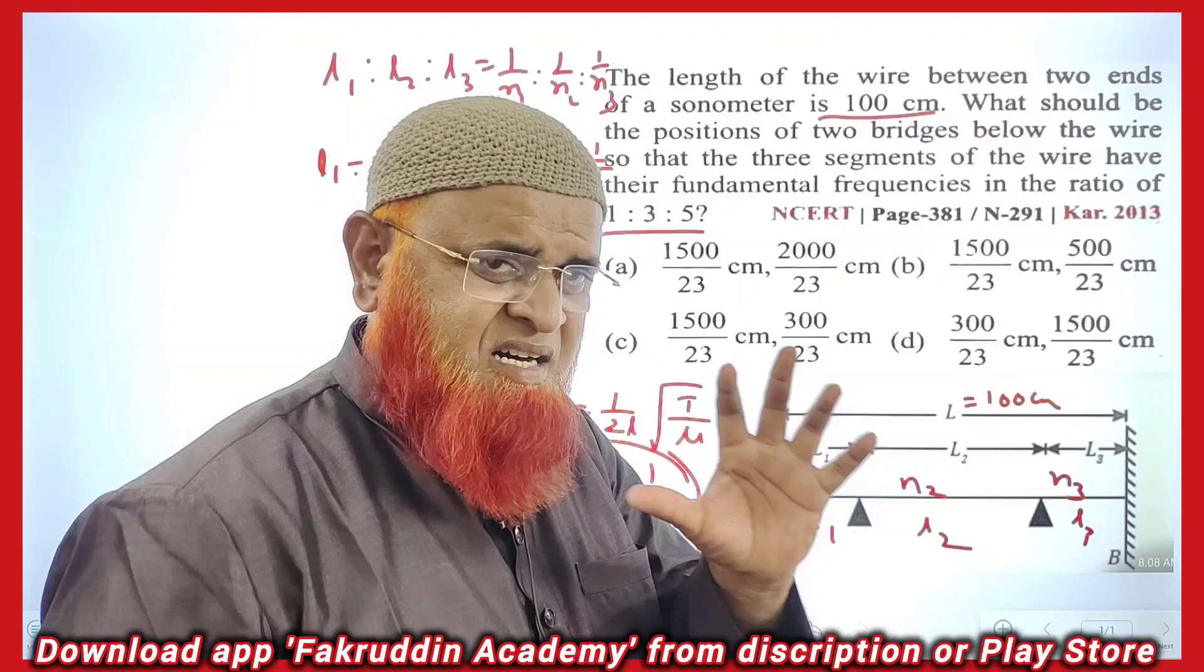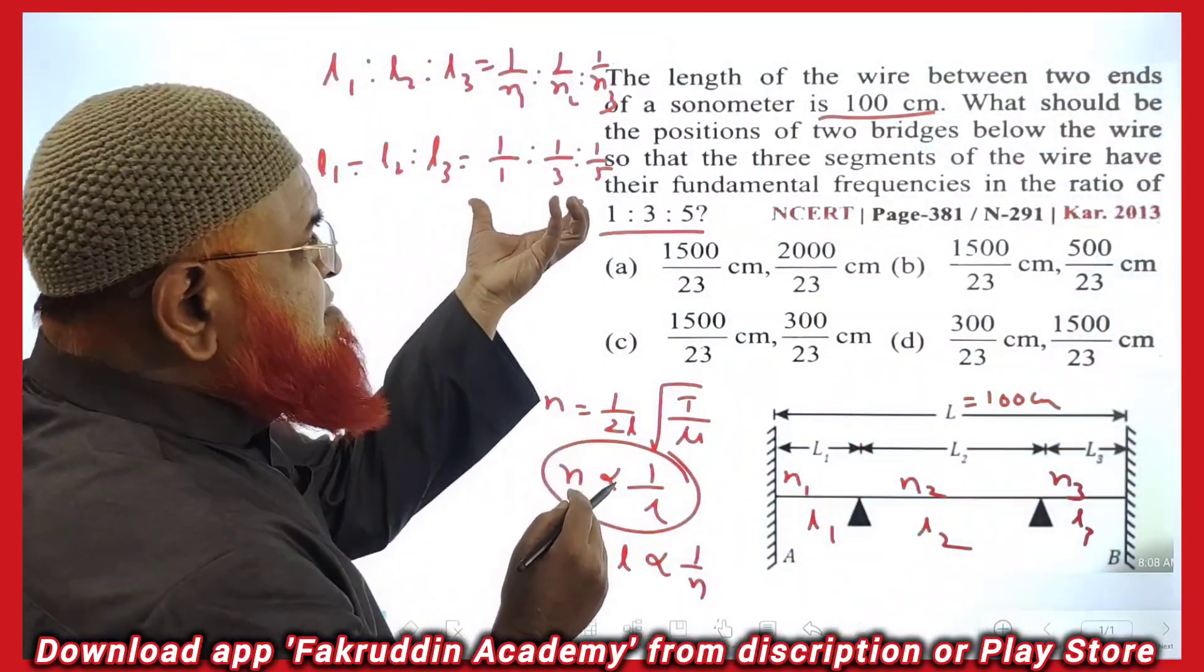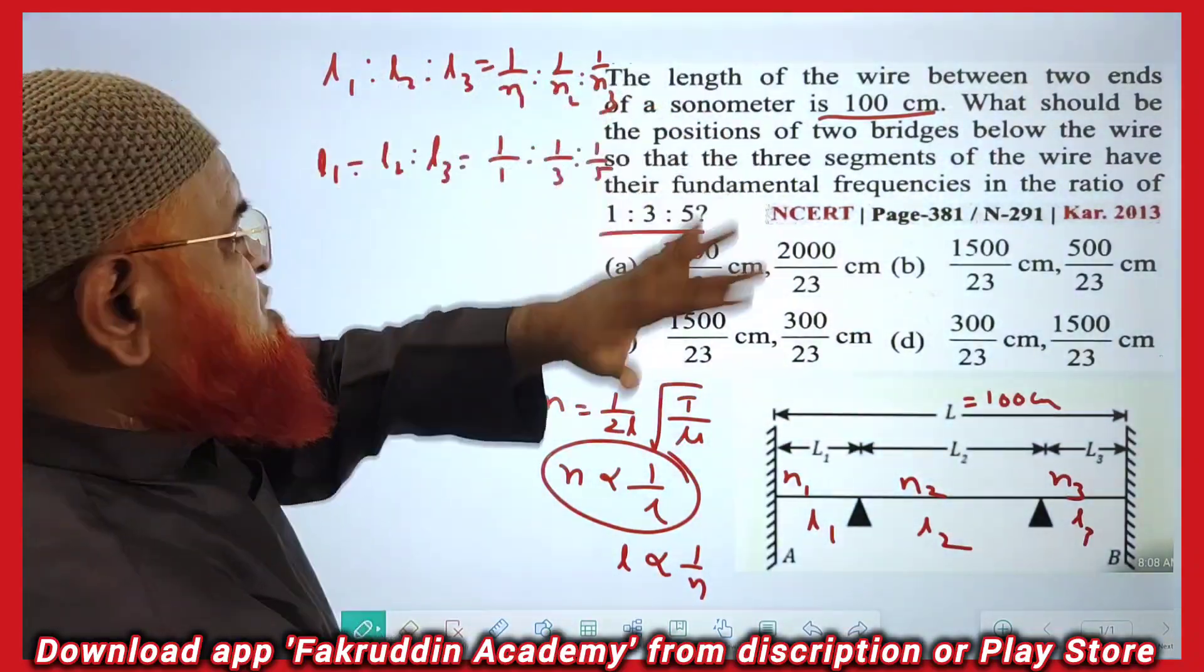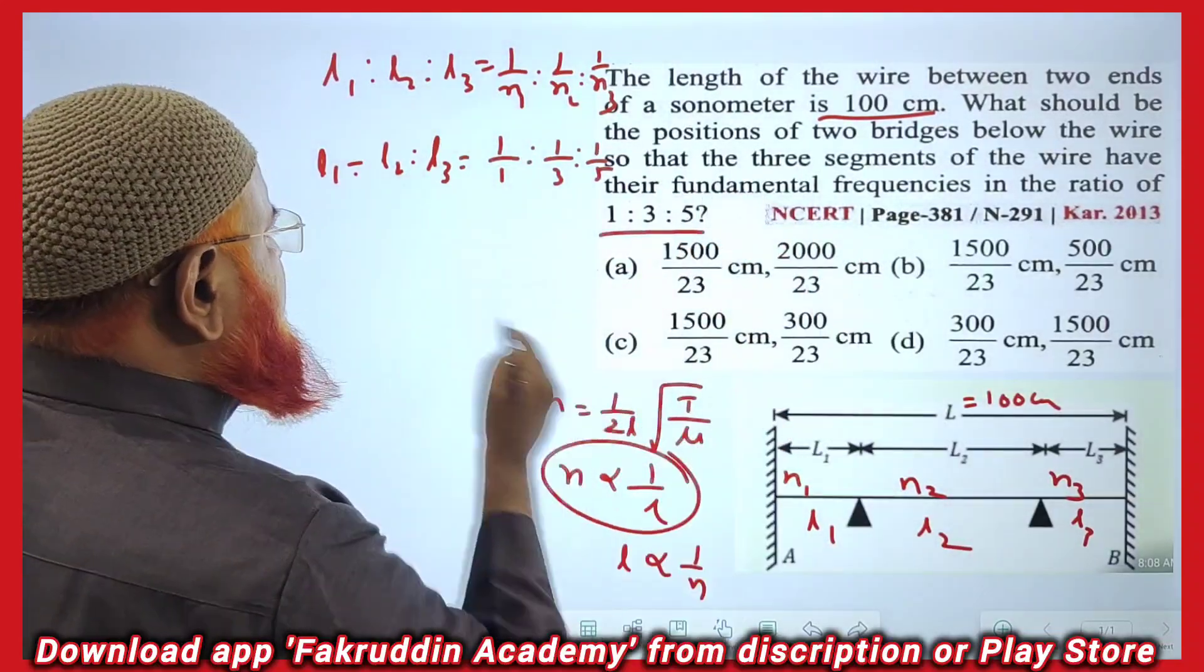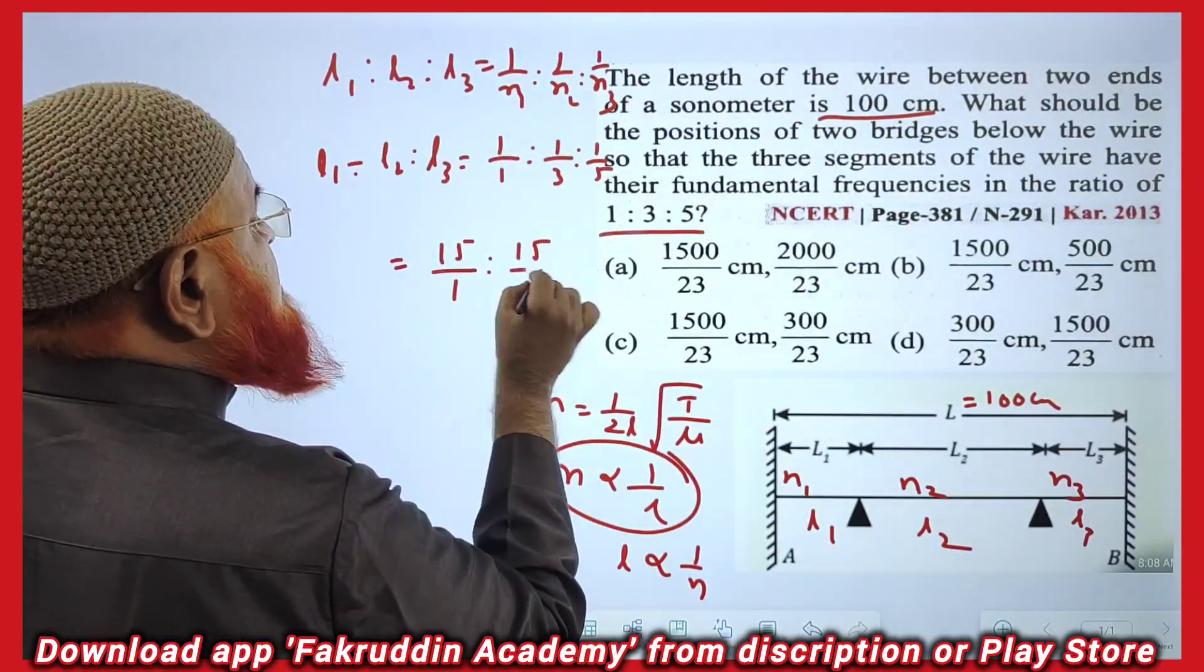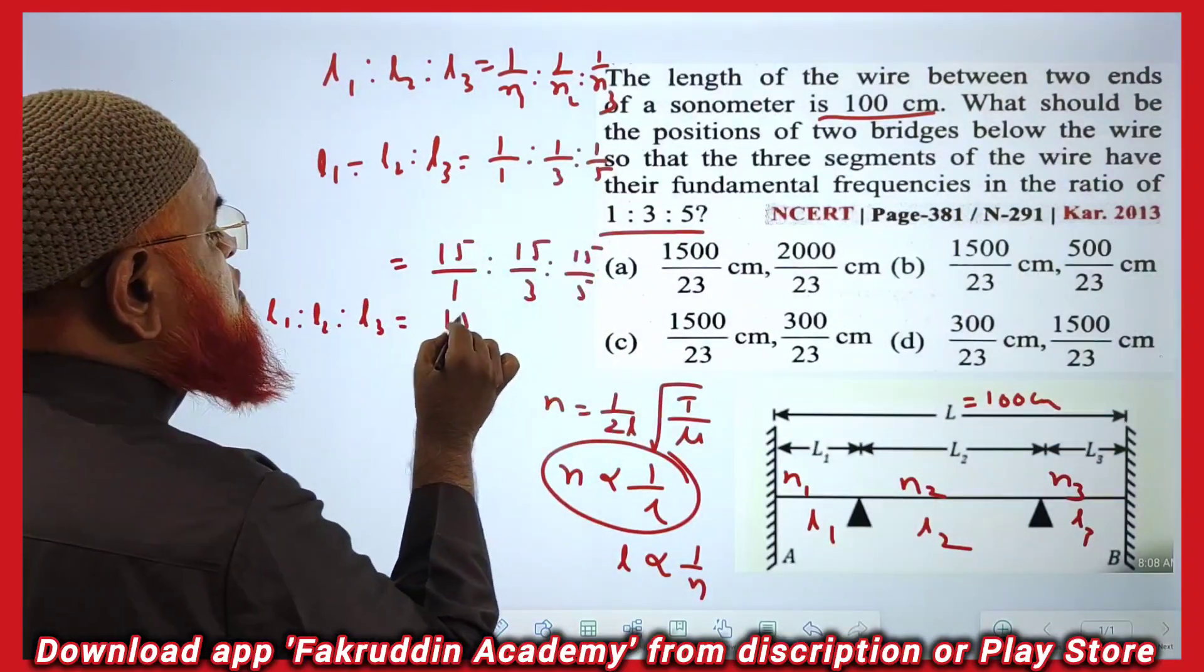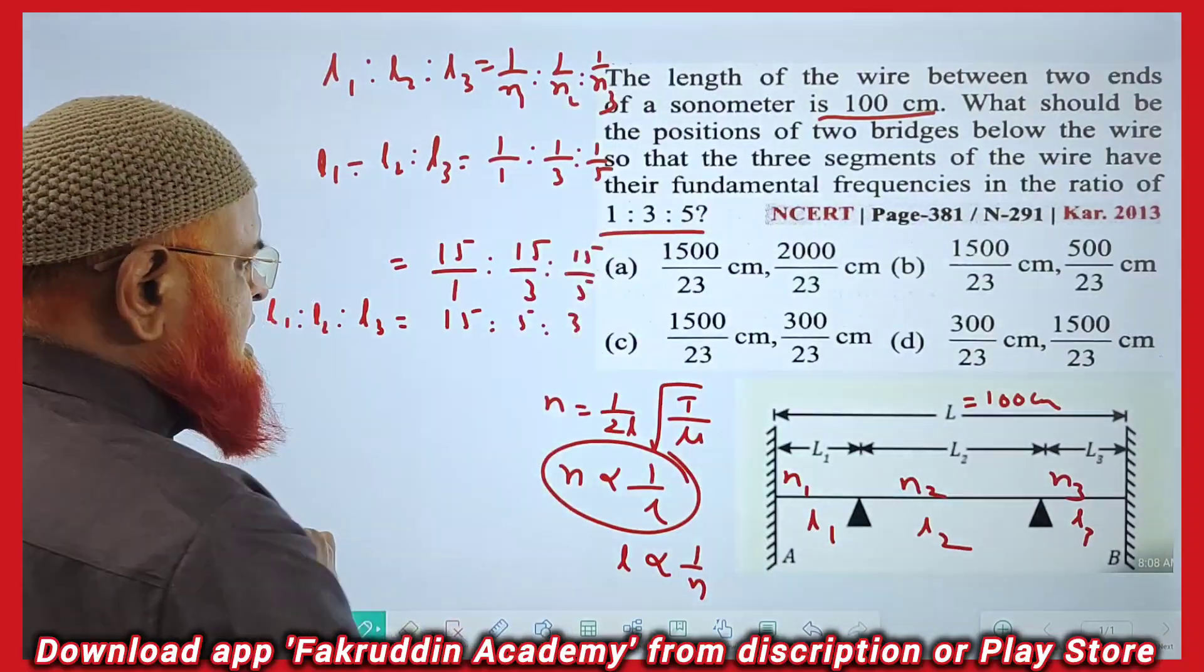Now you have to take the LCM of these three numbers and multiply the LCM with the numerator so that you will get proper ratios of lengths. What is the LCM? 15. So you can write 15/1, 15/3, and 15/5. With this you will get a ratio: L1:L2:L3 = 15:5:3.